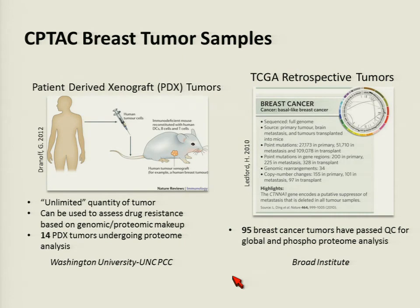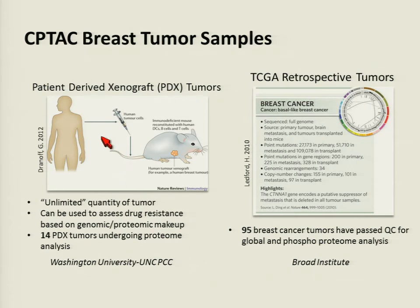The breast tumor samples we're using are patient-derived xenograft tumors, or PDX tumors. These are created by taking primary cells from breast tumors and injecting them into immunodeficient mice where they can grow. This gives us a hypothetically unlimited quantity of tumor material since you can continue grafting into different mice, and it can be used to assess drug resistance based on genomic and proteomic makeup. Currently there are 14 PDX tumors undergoing proteome analysis, already having undergone genome sequencing and RNA-seq, created and maintained at Washington University and UNC-PCC.